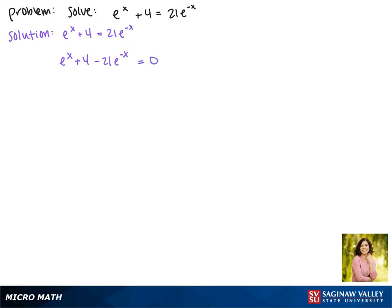Now this isn't in quadratic form yet, but it can be if we multiply both sides by e to the x. On the left, this gives us e to the 2x plus 4 e to the x minus 21, and on the right, this stays 0.